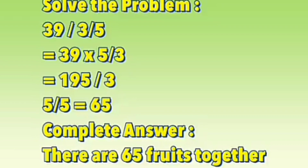The result is 65, so our complete answer is: there are 65 fruits altogether. We are going to check our answer: 3/5 equals 39, and 5/5 is 65. Reverse computation: 65 minus 39 equals 26, and 39 plus 26 equals 65. So therefore our answer is correct.